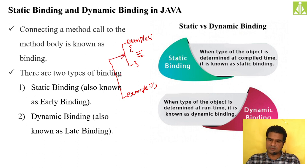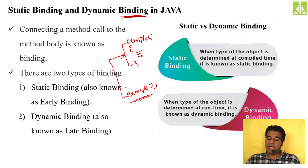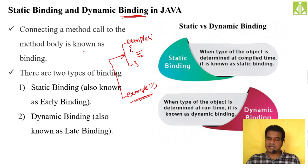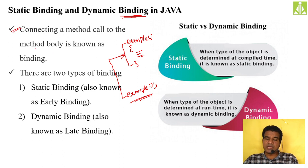The connection from the method call to the method body — whatever connection you establish — we call this binding. Connecting a method call to the method body is known as binding. There are two types: static binding and dynamic binding. If the binding process happens at the time of compilation, we call it early binding or static binding. If the method call is connected to the method body at the time of execution, we call it dynamic binding or late binding.